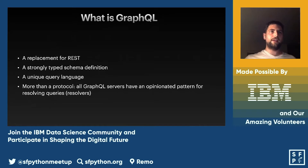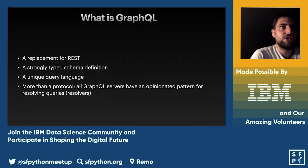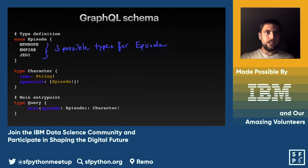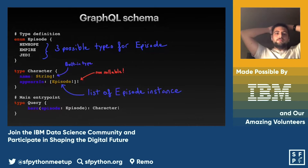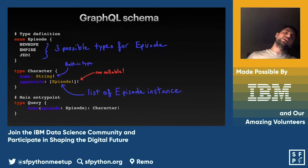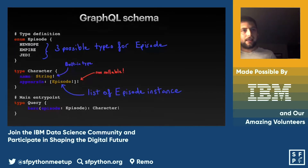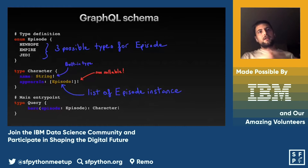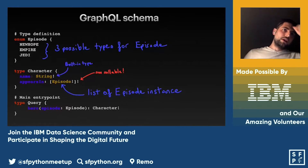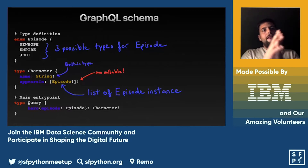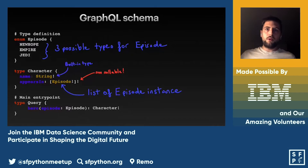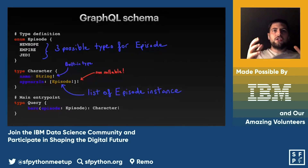Let's look at a valid GraphQL schema for a Star Wars backend. The first thing we see is an enum definition — think of enums like you would in Rust, C, Go, or Python. This enum has three different types for episode. Then we have a character type, which you can think of as a dictionary or class — it has different fields with predefined value types. A character has a name which is a String, and a field called 'appearsIn' which returns a list of episodes. The exclamation mark means the field must return a non-null value.